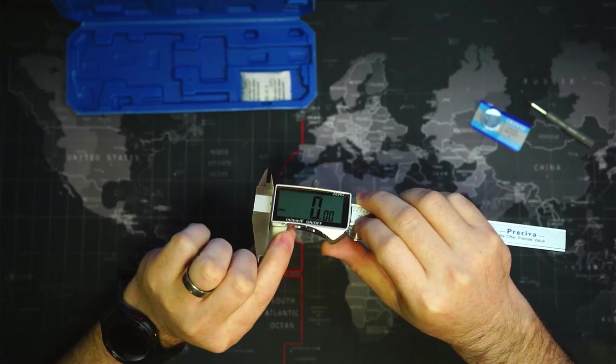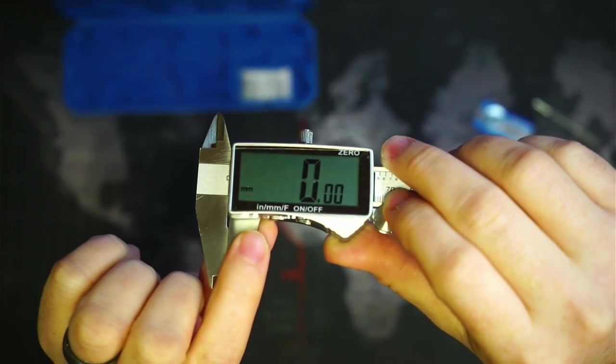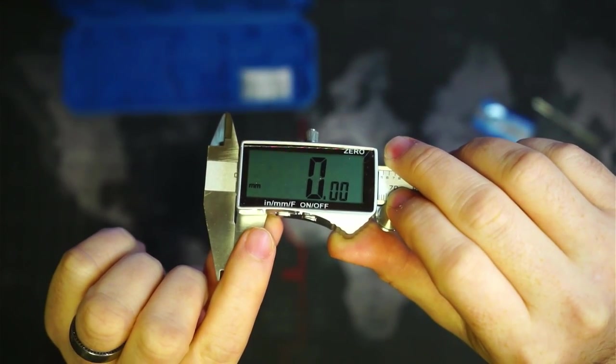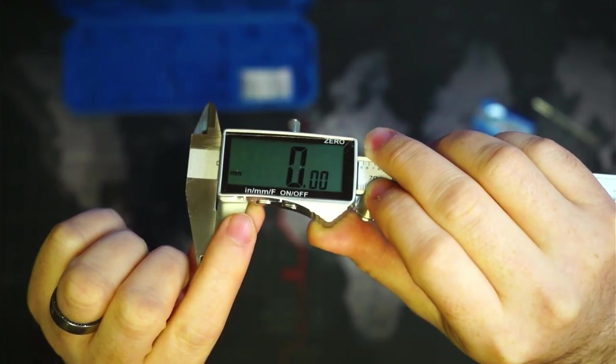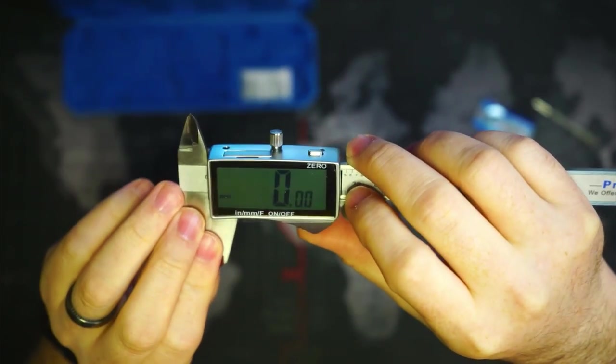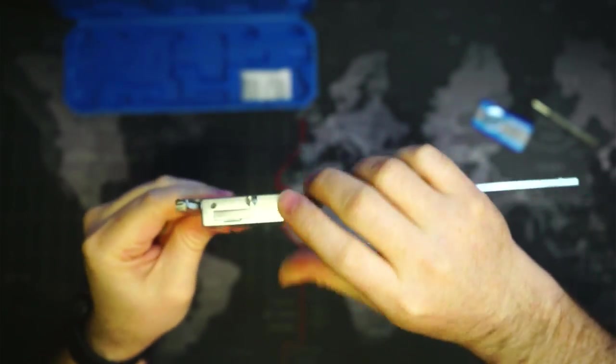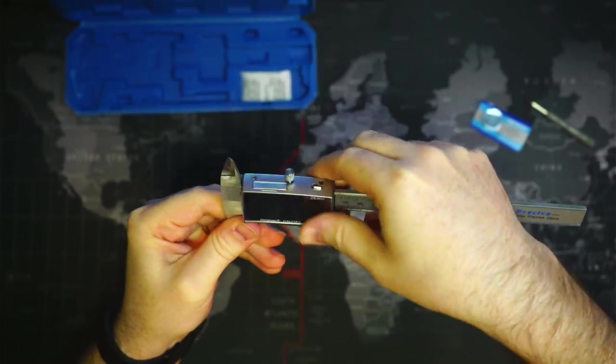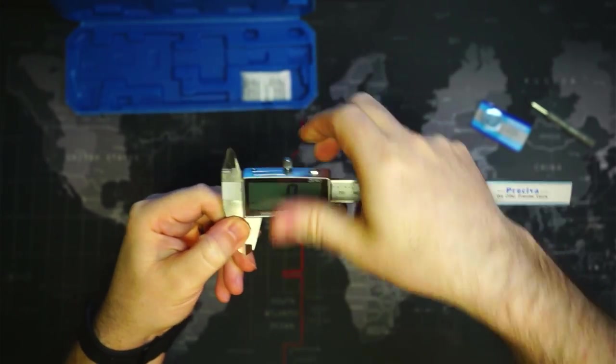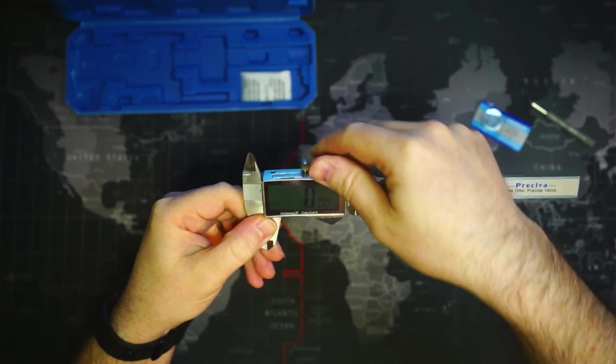To change from millimeters to inches, or imperial to metric, and our on-off button. And then we have a lock stop, so that we can lock our measurement in place, and this will no longer slide on here.